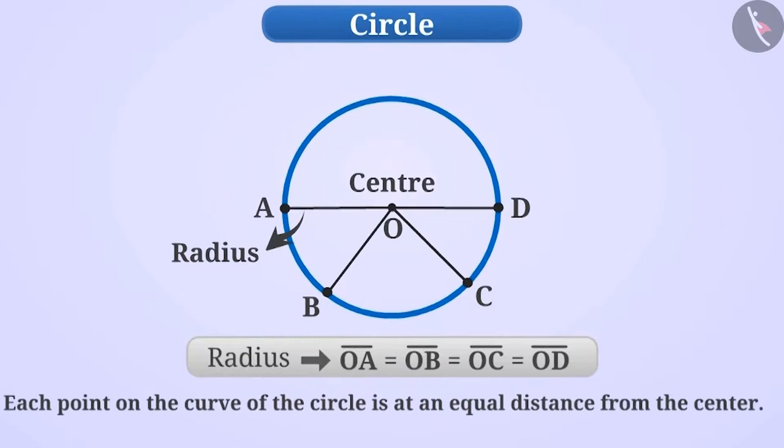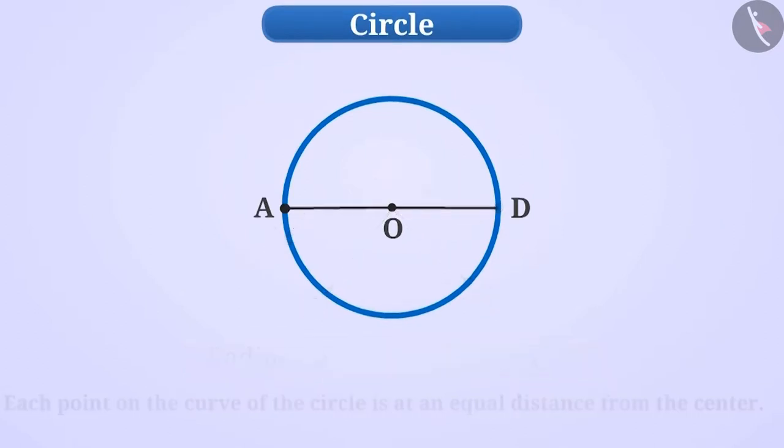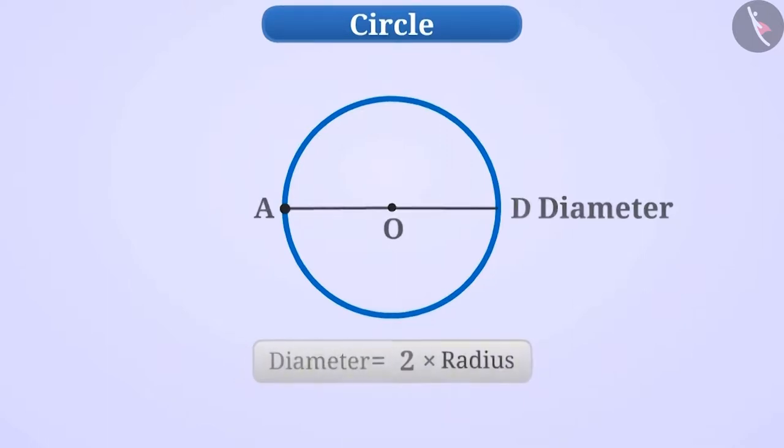There is another important thing. Here we see that A, O and D are all in the same line. Or, we can say that the line segment AD is going through the center O of the circle. Such a line segment is called the diameter. The diameter of any circle is twice the radius.